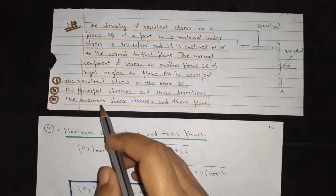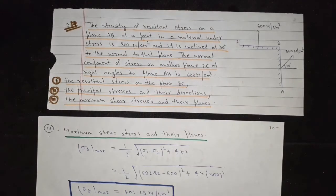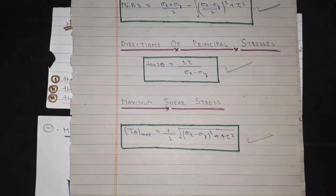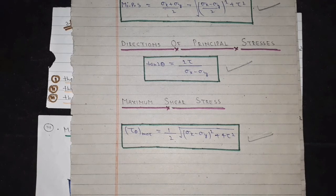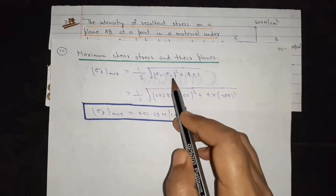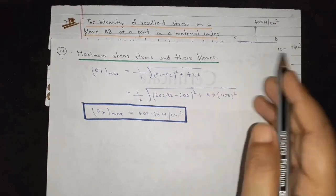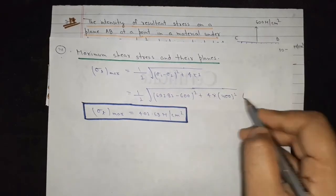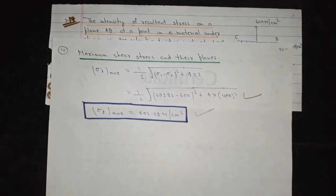The third part is the maximum shear stress and their planes. Using the maximum shear stress formula, we put in the values of sigma 1, sigma 2, and tau — all values are known — and the answer is obtained.